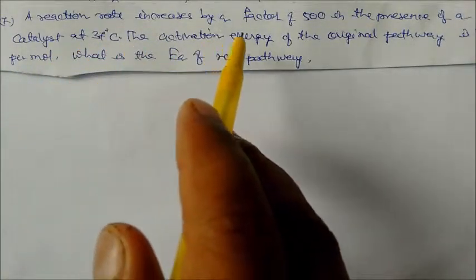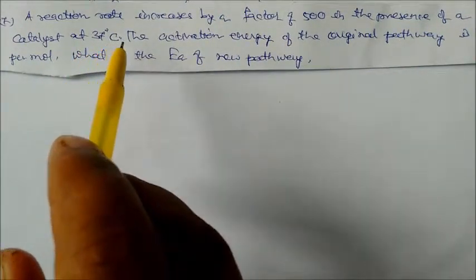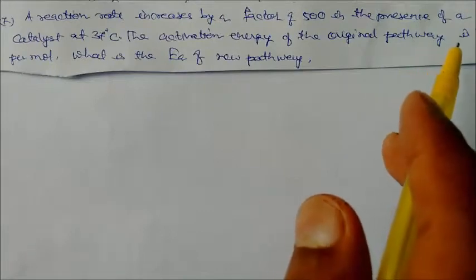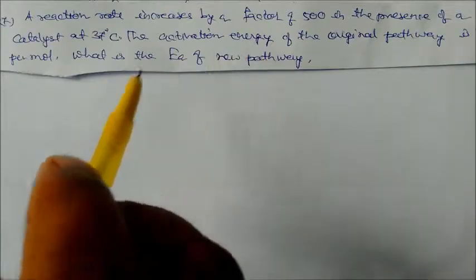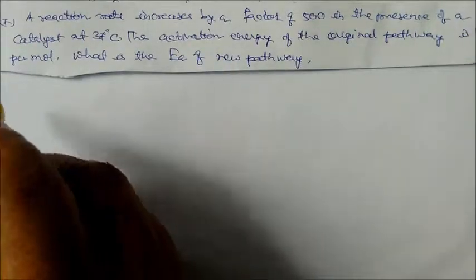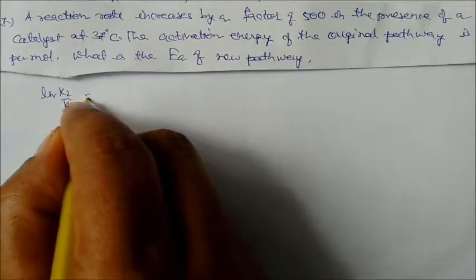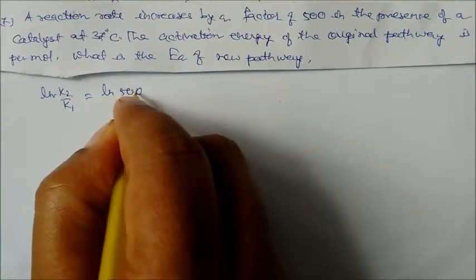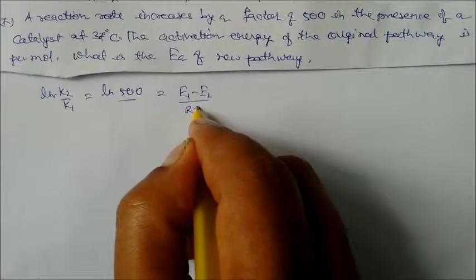Next problem: A reaction rate increases by a factor of 500 in the presence of a catalyst at 37 degree centigrade. The activation energy of the original pathway is 106 kJ/mol. What is the activation energy of the new pathway? We use ln(K2/K1) = ln(500) = (E1 minus E2)/(R×T).